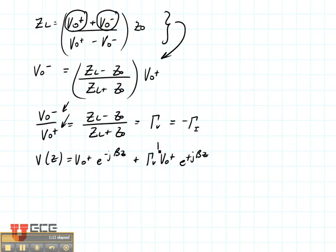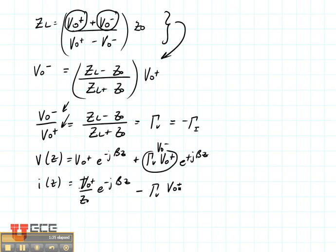This is a very common, slightly different version of the same equation. Then I of Z is equal to V0 plus divided by Z0 times E to the minus J beta Z minus the voltage reflection coefficient times V0 plus divided by Z0 E to the plus J beta Z.